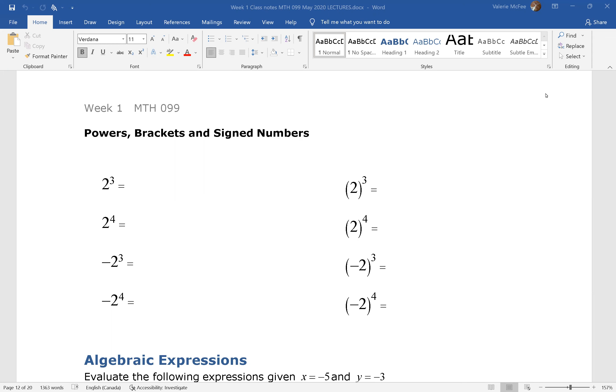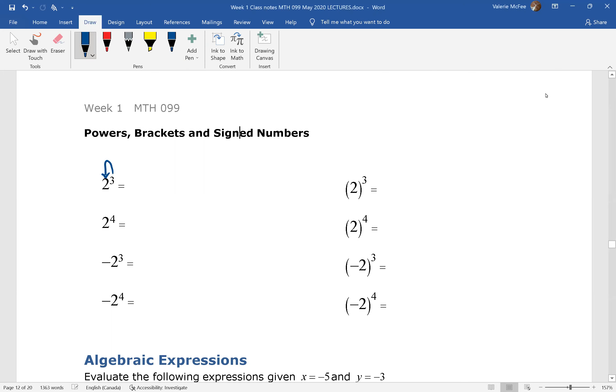Remember that we said that the exponent applies to what it is directly beside. So, we have in the first case 2 times 2 times 2, and in the second case 2 times 2 times 2, but notice that I've written it a little bit differently. We can do the same thing here and here.